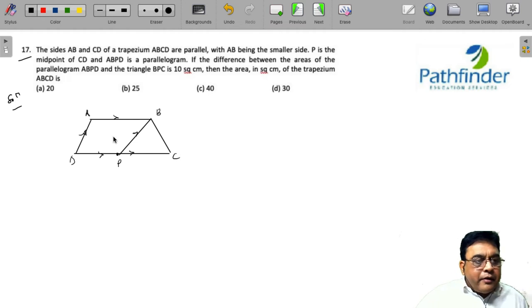So we have a parallelogram and we have a triangle. If the difference in the areas of parallelogram ABPD and triangle BPC is 10 square centimeters, the area of this parallelogram must be base into height.